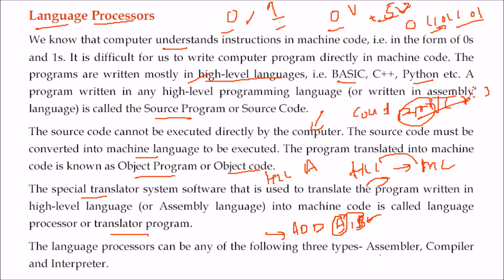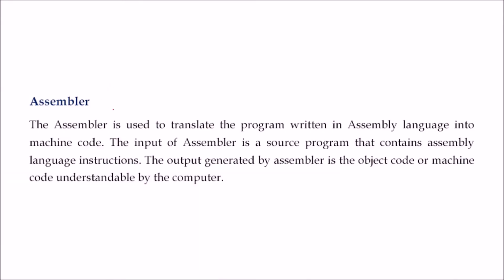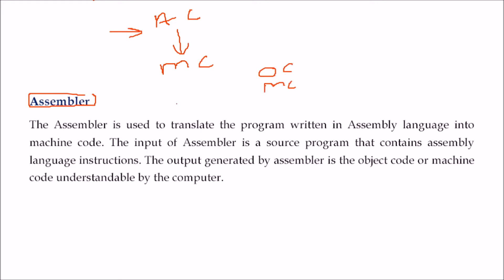Language processors are mainly of three types: first is the assembler, second is the compiler, and third is the interpreter. The assembler handles assembly language, which is intermediary between high-level language and machine language. When assembly language is converted to machine language, the program that does this is called an assembler. The input is assembly language instructions and the output is object code or machine language understood by the computer.